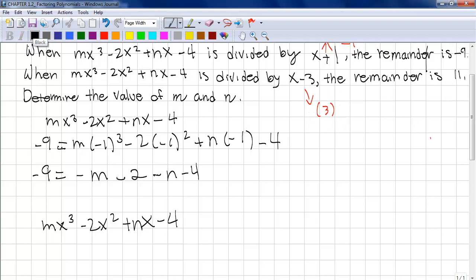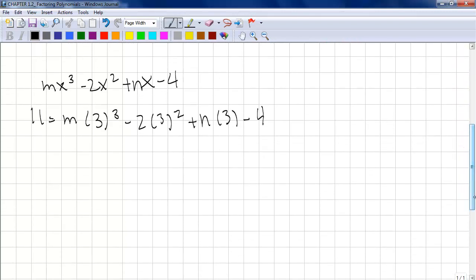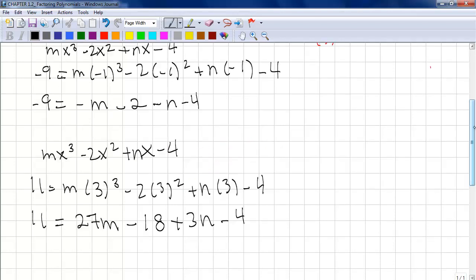Let's rewrite that. So we have 11 equals m(3)³ - 2(3)² + n(3) - 4. Now let's simplify this like we did with the last one. 11 equals 3 cubed is going to be 27. So 27m minus 3 squared is going to be 9. 9 multiplied by 2 is going to be 18 plus 3n minus 4. Actually, I made the mistake of not simplifying this more when I could.